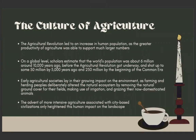Next, the culture of agriculture. The agricultural revolution led to an increase in human population, as the greater productivity of agriculture was able to support much larger numbers. On a global level, scholars estimate that the world's population was about 6 million around 10,000 years ago before the agricultural revolution got underway, and shot up to some 50 million by 5,000 years ago and 250 million by the beginning of the common era. Early agricultural societies had a growing impact on the environment, as farming and herding peoples deliberately altered the natural ecosystem by removing the natural ground cover for their fields, making use of irrigation, and grazing their domesticated animals. The advent of more intensive agriculture associated with city-based civilizations only amplified this human impact on the landscape.